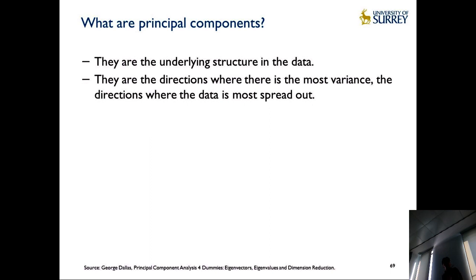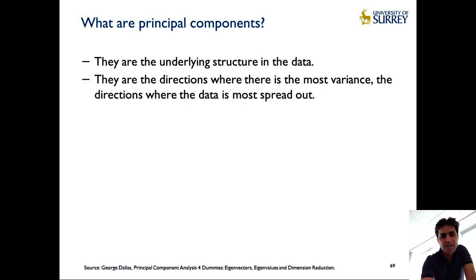The idea of Principal Component Analysis is looking at data and identifying areas which have the most variance in terms of direction, and trying to find principal components that can represent that. Let me show you an example. Let's say you have a data set where the X-axis shows age and the Y-axis shows the number of hours people spend on the internet.